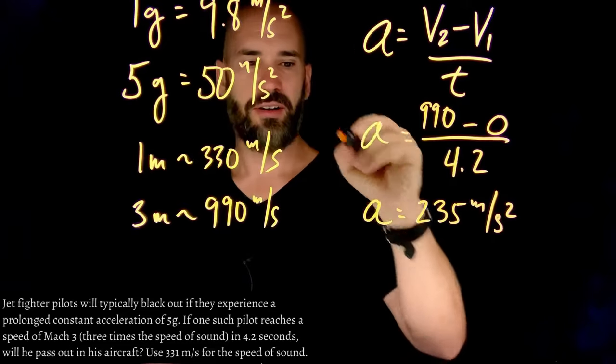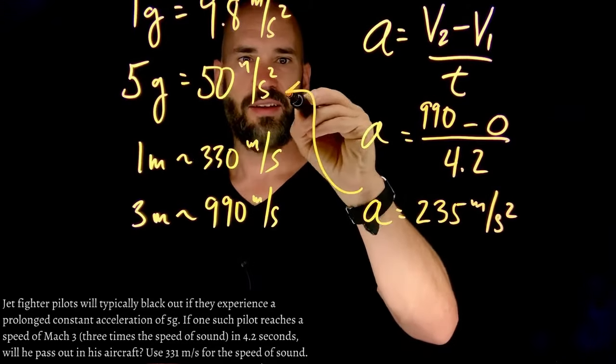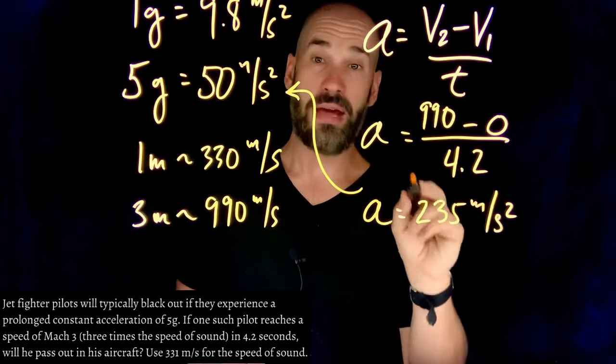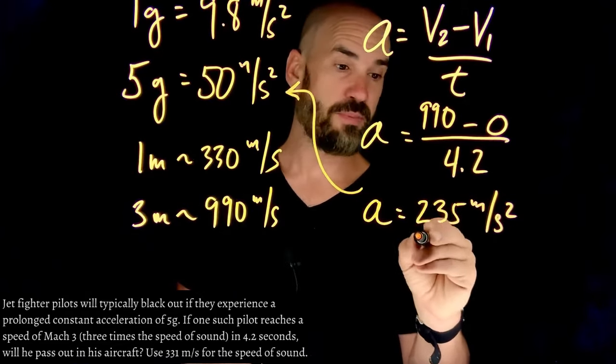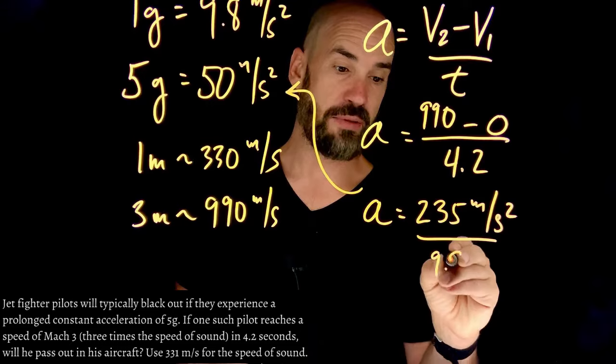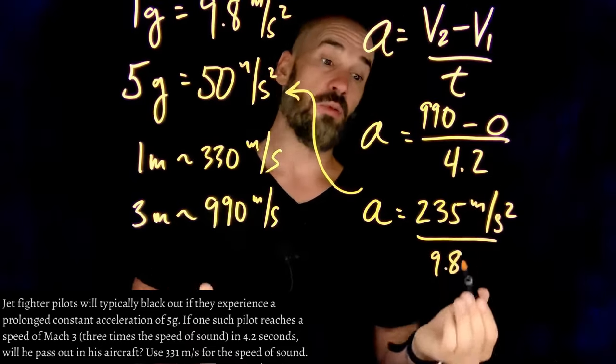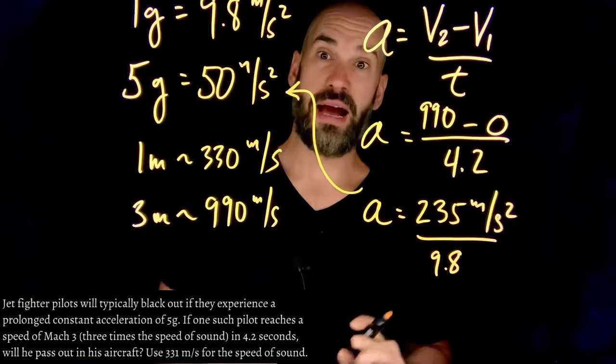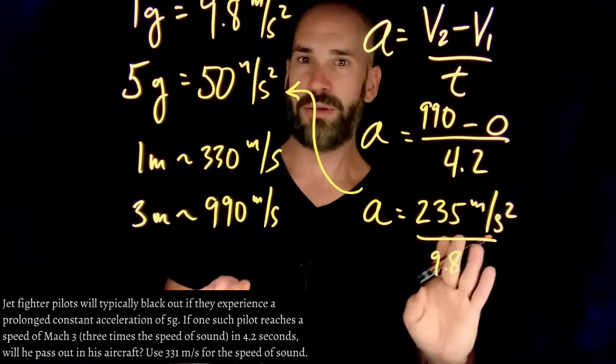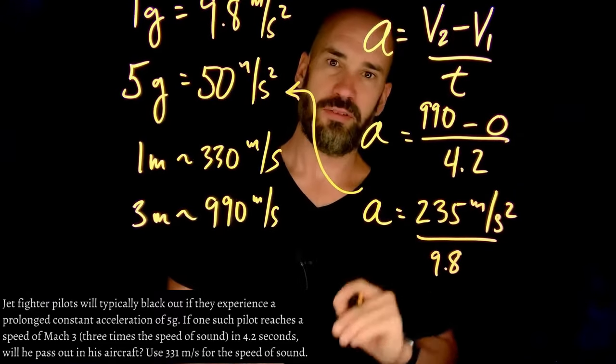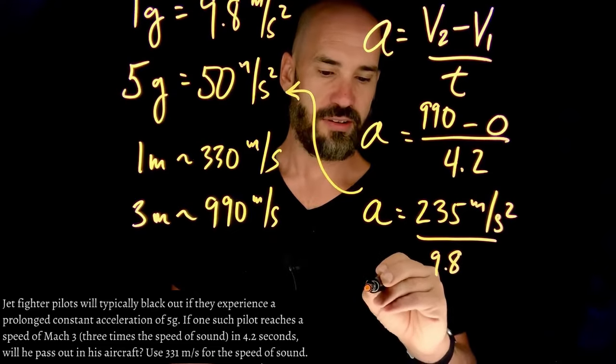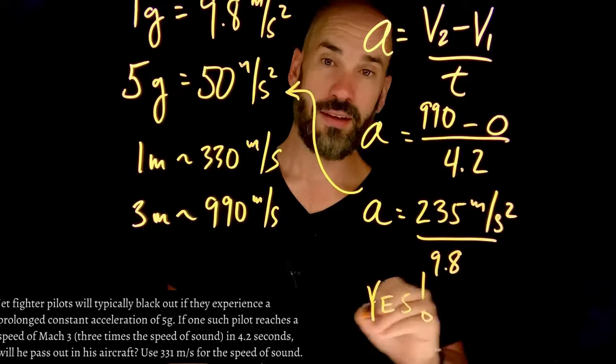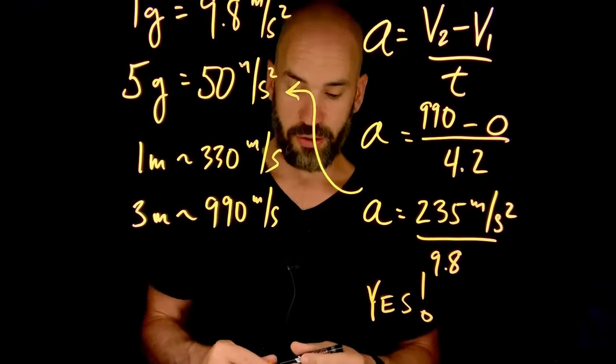Is that bigger than this? Yes, by a lot. This will be many G. If we divide this by 9.8, we can find out how many G that is. That's going to be roughly 24 G. This would make somebody pass out. I obviously took an extreme example just to kind of be fun and silly, but the answer is yes, the poor pilot is passing out. So that's one example.